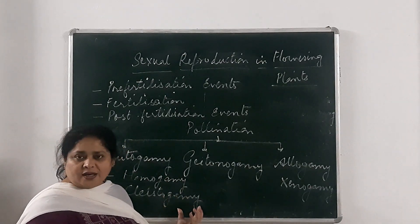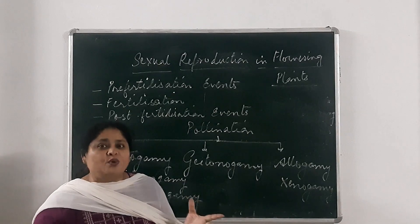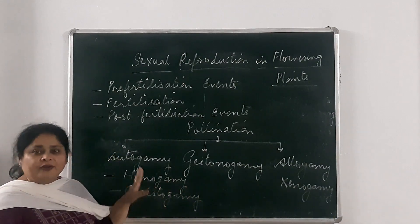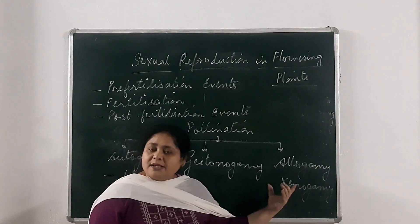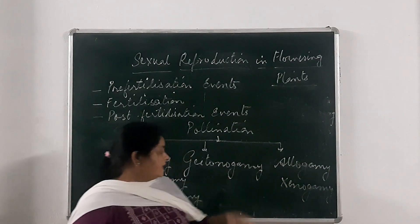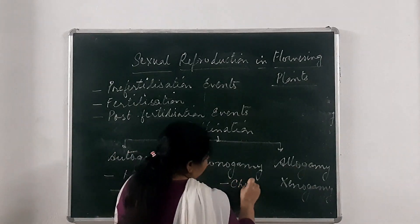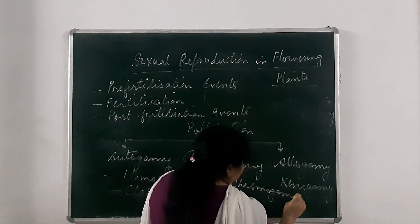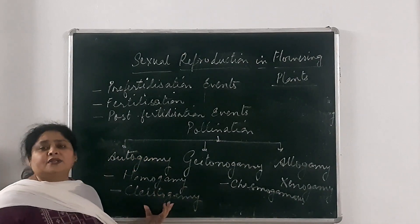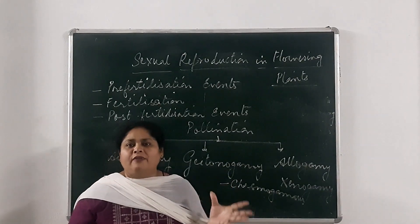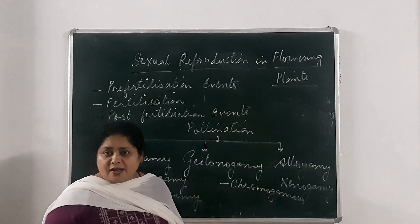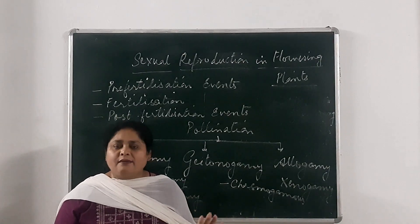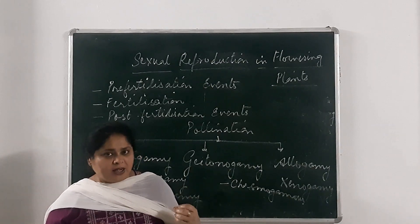The reproductive parts of cleistogamous flowers do not expose themselves, so they cannot receive pollen from any other plant. These are characteristics of autogamy. For xenogamy, the characteristics are just the opposite — these flowers are totally open. As you would have seen in rose or china rose, the sex organs of these flowers are exposed and ready to receive pollen grains from other plants or other flowers.